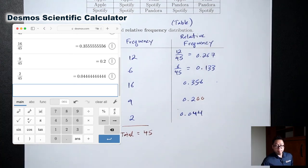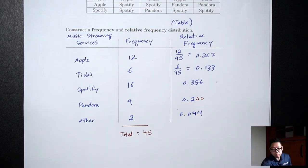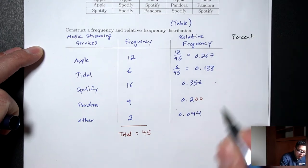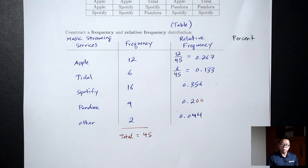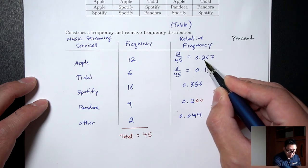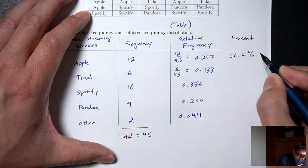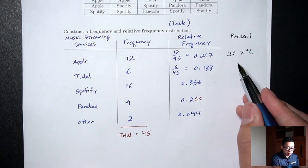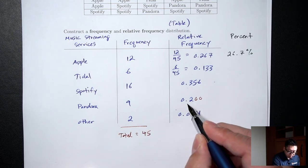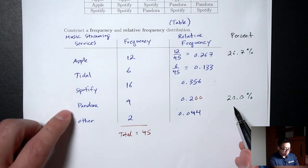Now, what is this relative frequency? Relative frequency is basically the percent. Right now they're decimals, but we can always convert to percents. To convert to a percent, multiply by 100, which is the same as moving the decimal point 2 to the right. So 0.267 becomes 26.7%, meaning 26.7% said Apple was their favorite. And 0.200 as a percent is 20.0%, so 20.0% said Pandora was their favorite.